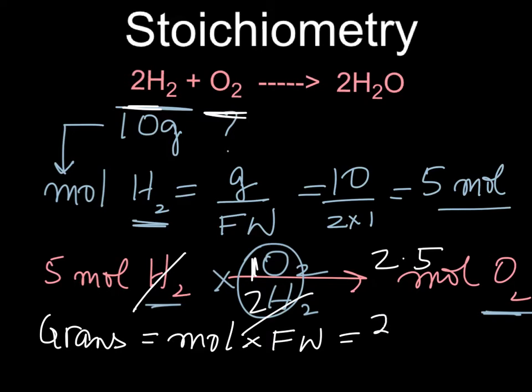So, moles, we have 2.5 moles, and the formula weight of O2 is not 16, but 16 multiplied by 2, 32. So, if we do that, 32 times 2.5, let's see, 32 times 2.5 would be 80 grams. So, we'll get 80 grams of O2 that would be needed.